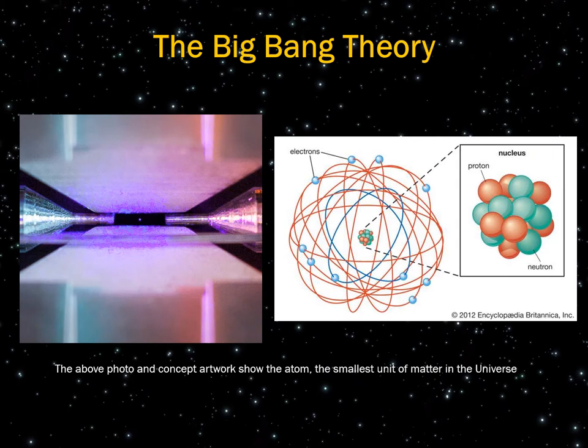Protons and neutrons began to form from the particles in superheated gas clouds. These are parts of the nucleus, or center, of atoms — the basic unit of all baryonic, or light matter, in the observable universe.